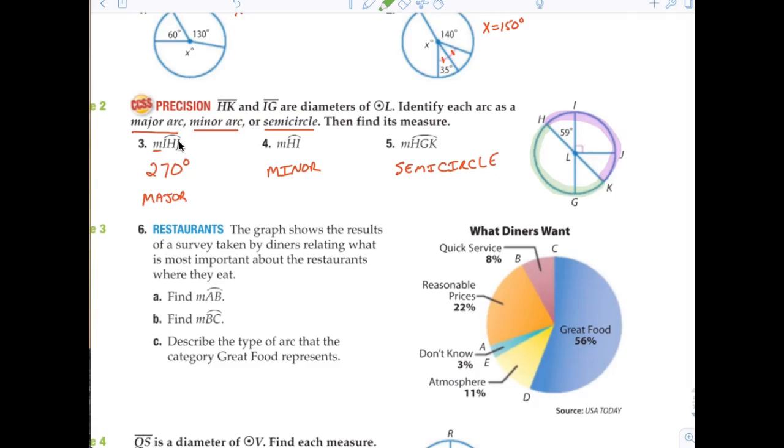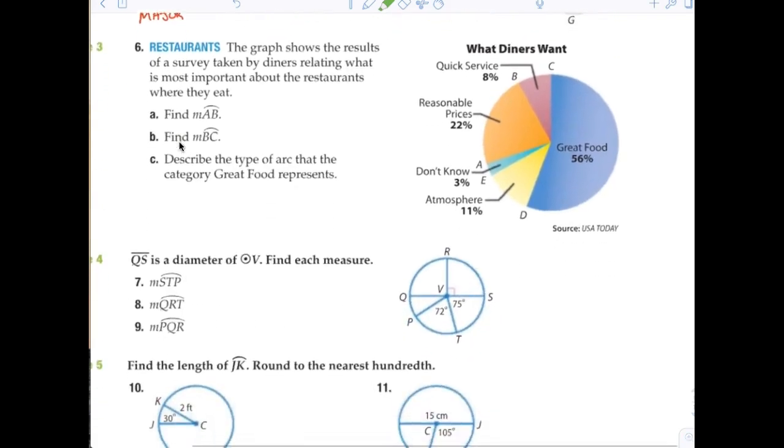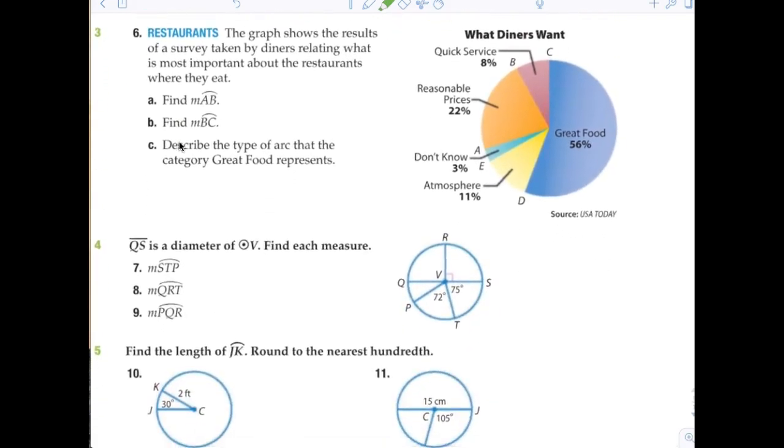I told you, it's very easy. So, let's continue on. I don't think it's a big deal. The graph shows the results of the survey taken by diners relating what is most important about the restaurants where they eat.